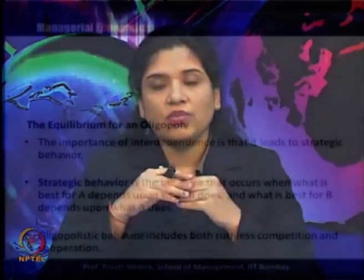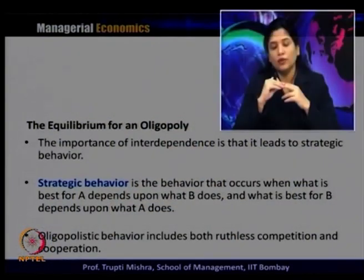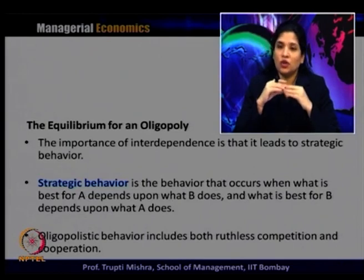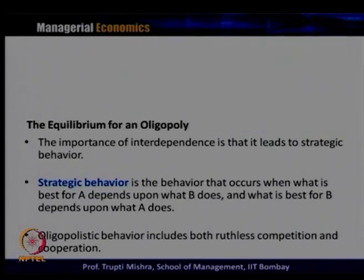Oligopoly's behavior includes both ruthless competition and cooperation. When it comes to collusive oligopoly, it is about cooperation; when it comes to non-collusive oligopoly, it is generally competition. Since it is competition or cooperation, the behavior is strategic, in the sense that the firm's well-being depends upon what the other firms do.